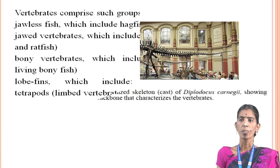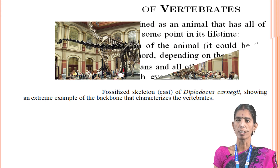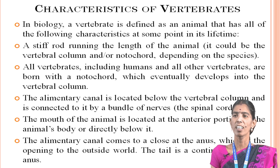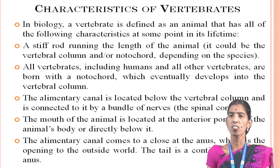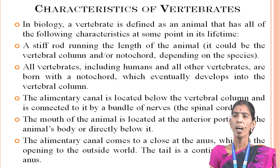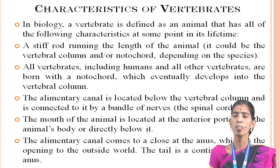This is the fossil skeleton of vertebrae, characteristic of vertebrates. In biology, a vertebrate is defined as an animal that has all of the following characteristics at some point in its lifetime: a stiff rod running the length of the animal, a vertebral column, and a notochord depending on the species. All vertebrates including humans are born with a notochord which eventually develops into the vertebral column.